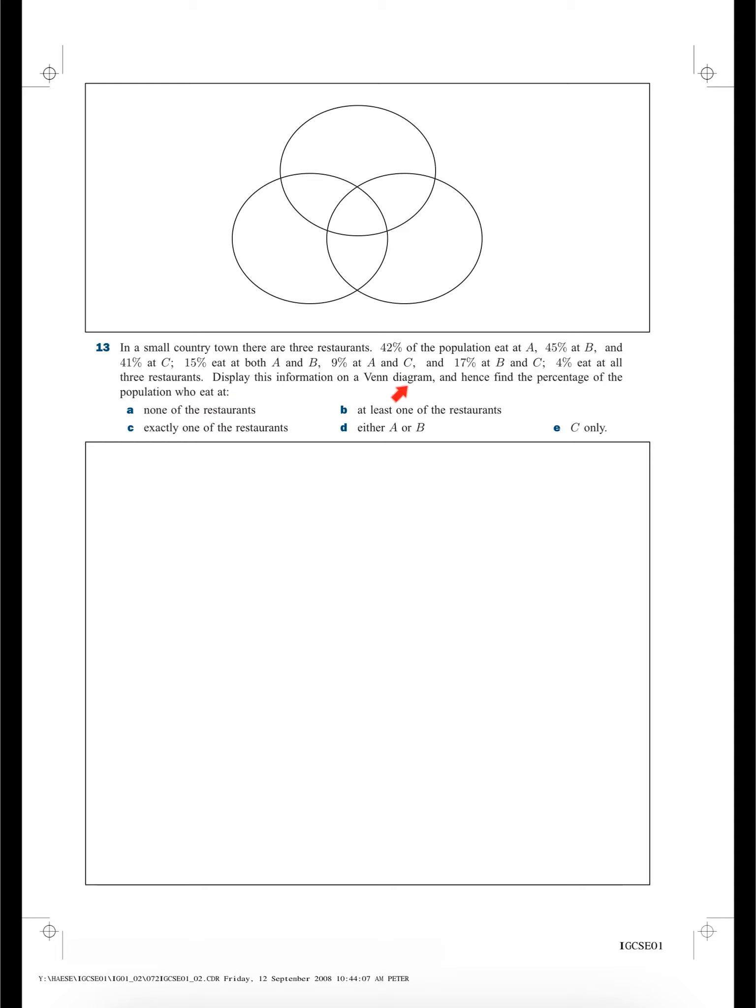Display this information on a Venn diagram and hence find the percentage of the population who eat at: A, none of the restaurants; B, at least one of the restaurants; C, exactly one of the restaurants; D, either A or B; E, C only.